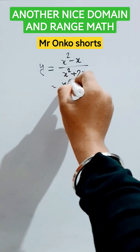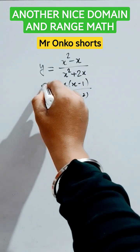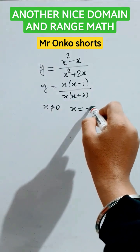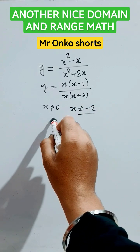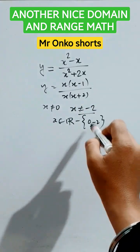So first take x common from both sides from numerator and denominator. So the bottom part can't be equals to 0. So x can't be equals to 0, x can't be equals to minus 2. So this is the domain: x belongs to real number set except 0 and minus 2.